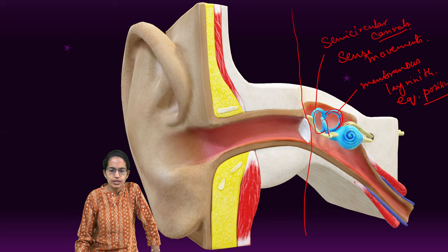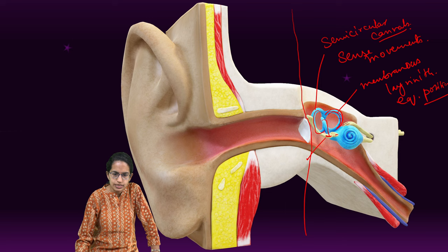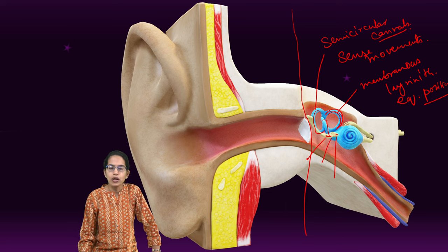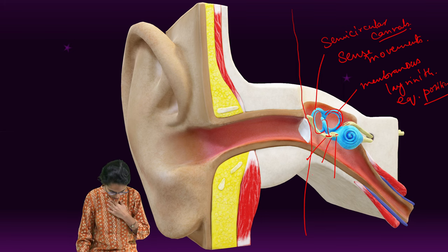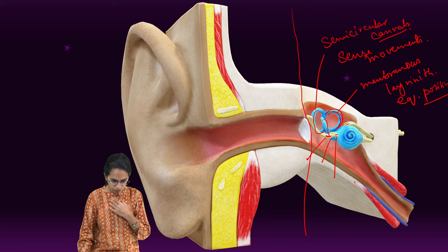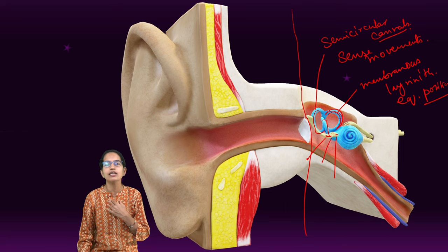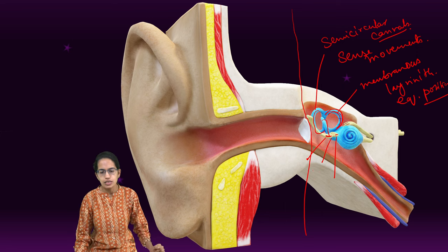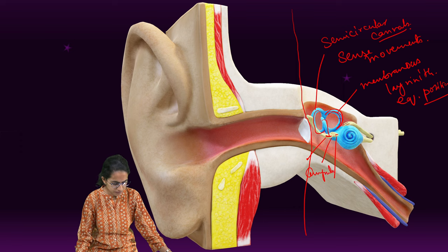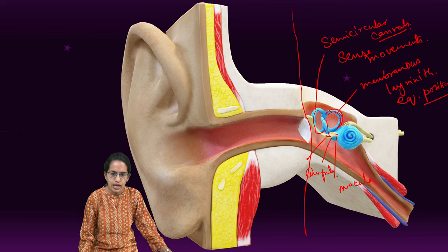The next part is the circular section. Here you can see there are cristae, ampulla, and macula. Ampulla is used for rotational movement — that is left-right movement. Macula is used for linear movement — that is up-down movement. So ampulla handles rotational movement, macula handles linear movement, and then there is the cristae.